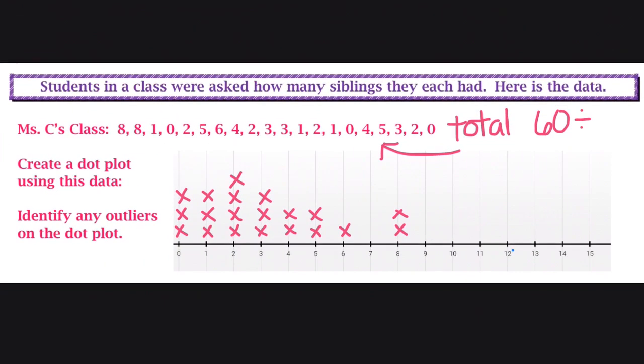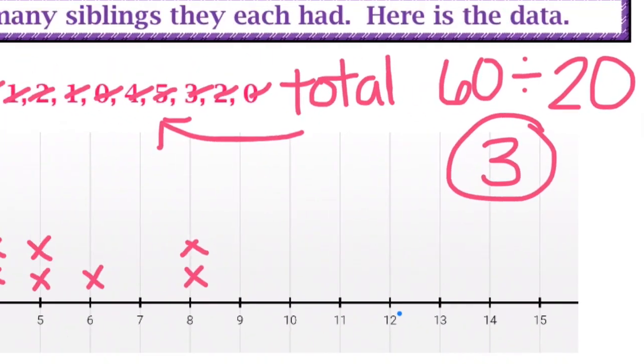Next, we have to divide by how many people were surveyed. In this case, there were 20 total students asked. So 60 divided by 20 gives us a mean of 3.